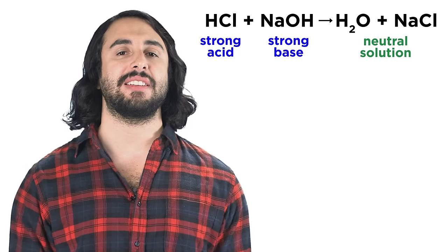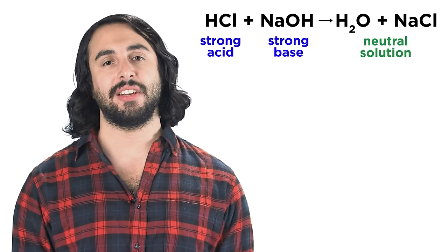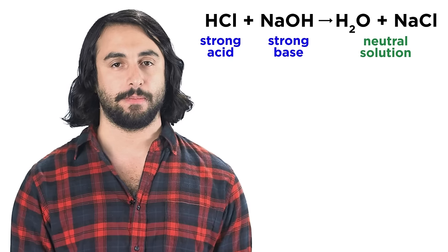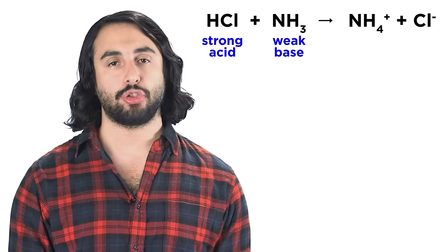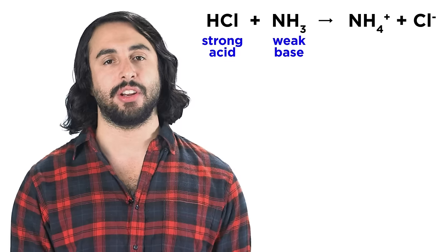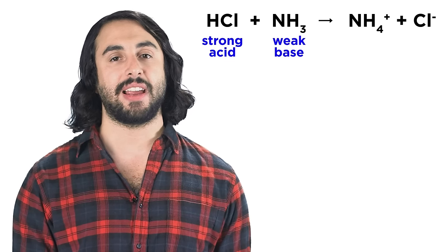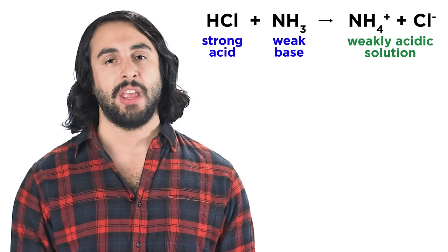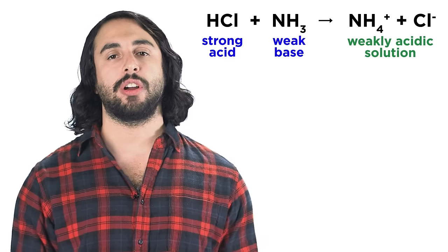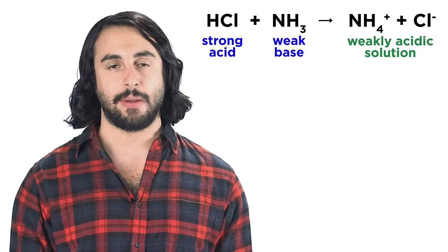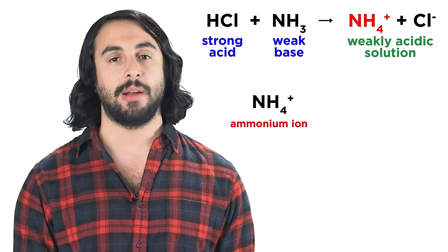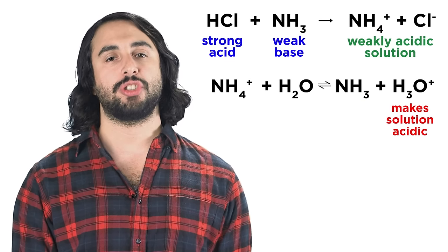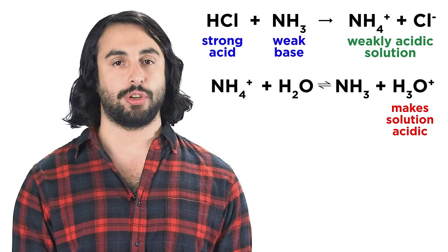But as long as this is the case, a strong acid and strong base will react to form a neutral solution. If instead a strong acid like hydrochloric acid reacts with a weak base like ammonia, the resulting solution will be relatively acidic, because the acid will completely protonate the base, giving us the ammonium ion, and the ammonium ion is weakly acidic, so it will generate hydronium in solution.